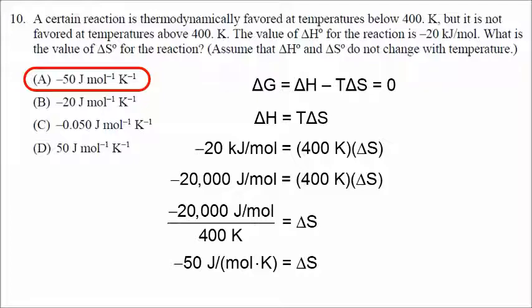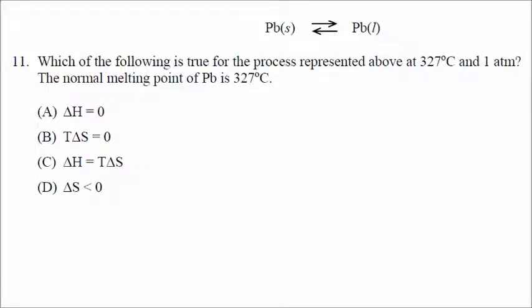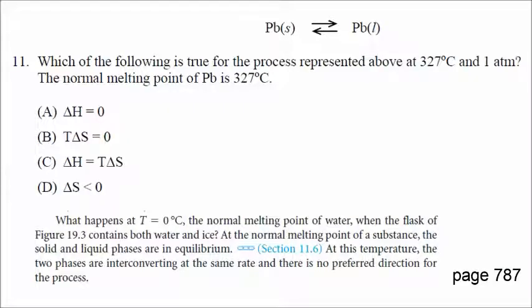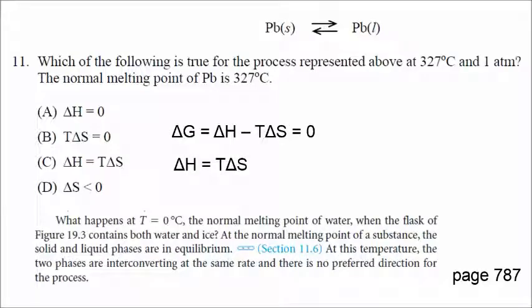The last multiple choice question, number 11: we are at equilibrium because we are at the melting point. At the normal melting point, the solid and liquid phases are in equilibrium. At equilibrium, delta G is zero and delta H equals T delta S. So number 11 is C.